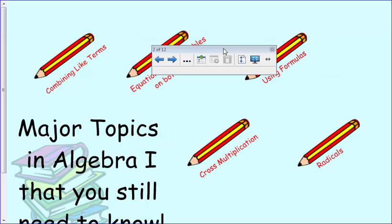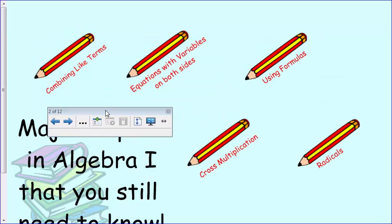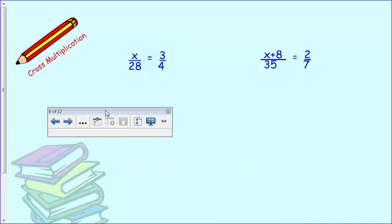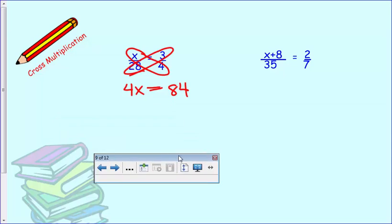Alright, let's look at some other topics. We've got two more topics to talk about that you need to know for geometry. Cross multiplication. Alright, so we've got two fractions equal to each other. It's known as a proportion and you've done this before in several of your other classes. We're going to go ahead and cross multiply. So x times 4 equals 28 times 3 which is 84. And now I can solve it like a one step equation. Divide by 4 and we get x equals 21.